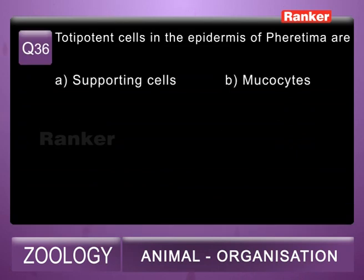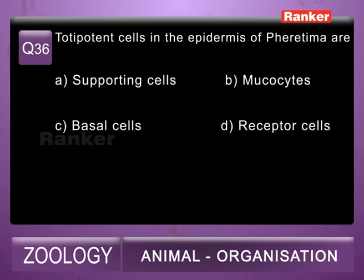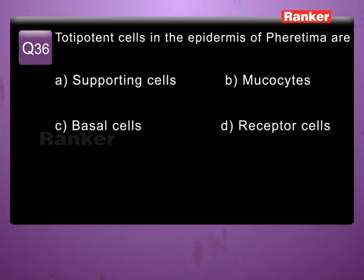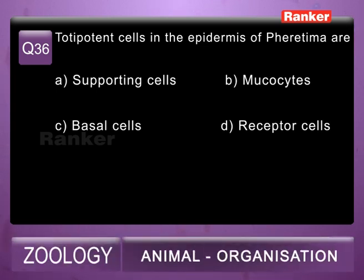Question 36: Protipotent cells in the epidermis of Pheretima are A) supporting cells, B) mucocytes, C) basal cells, D) receptor cells.